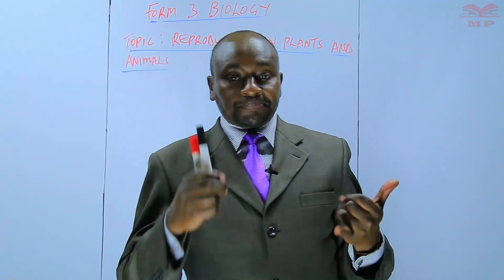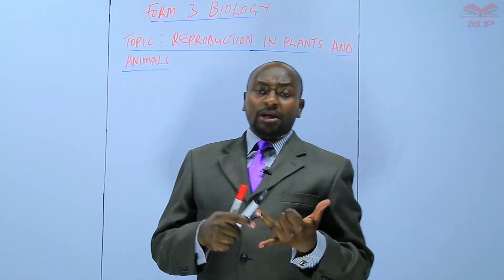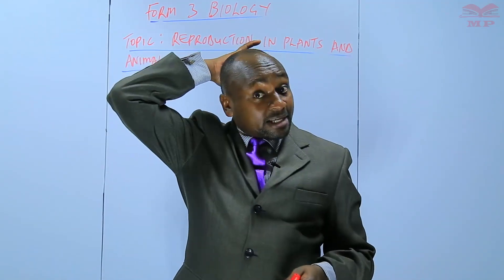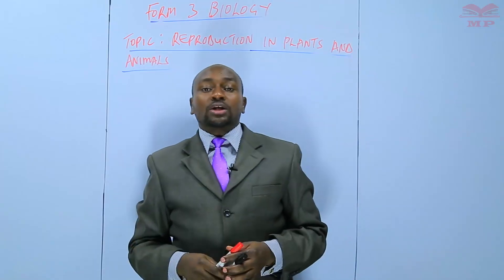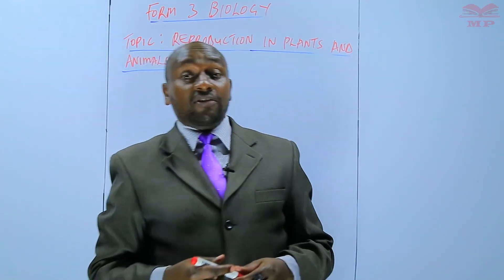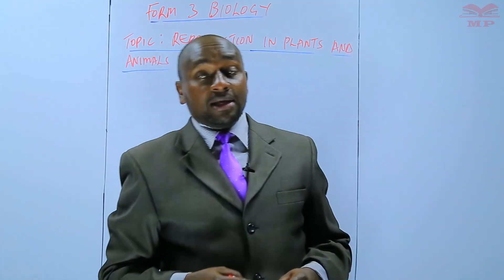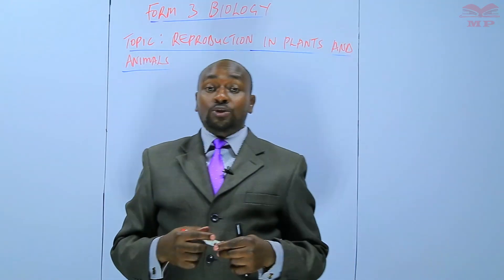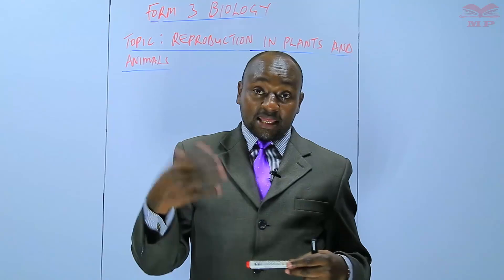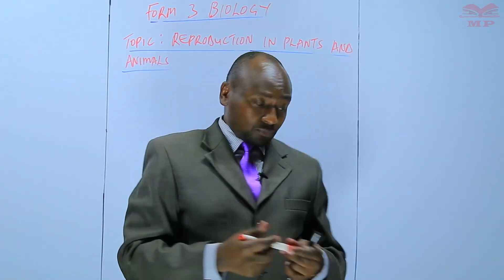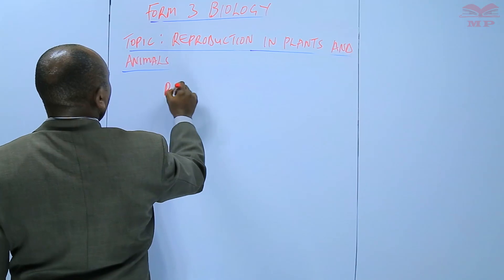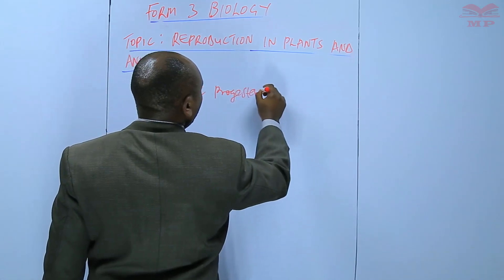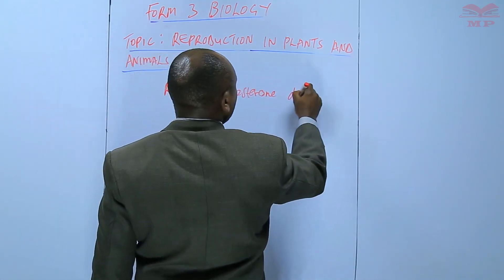We discussed the role of follicle stimulating hormone, estrogen, and luteinizing hormone. Luteinizing hormone is the hormone that stimulates the maturation and the bursting of the Graafian follicle to release the ovum — it's the one that causes ovulation. The remains after that we refer to as the corpus luteum, and they produce another hormone that we call progesterone. We want to find out what is the role of progesterone during the menstrual cycle.